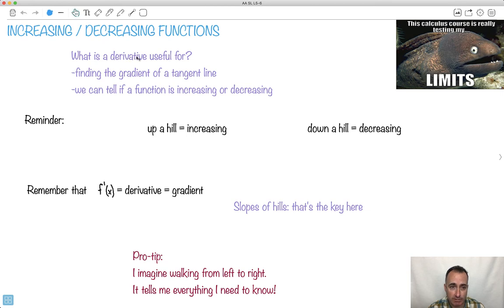We've been looking at derivatives and what to do with them, finding gradients of tangent lines, but it turns out now we can also tell where a function increases and where it decreases. That might be useful to know. So let's just give you a little quick reminder there. What do I mean by going up a hill?